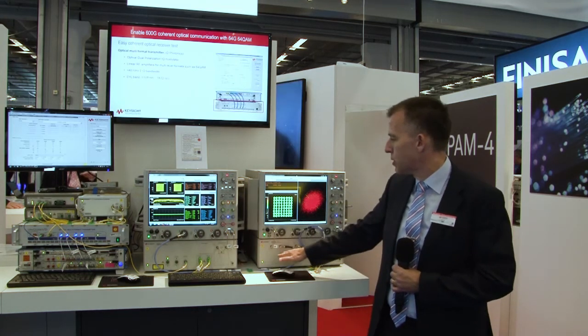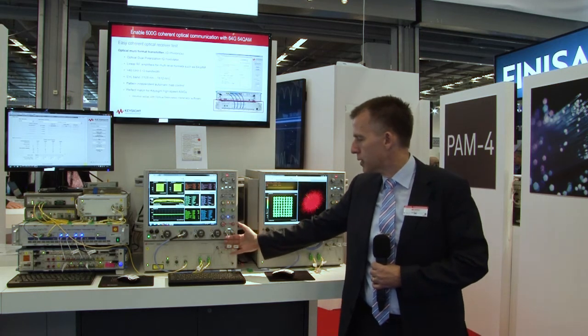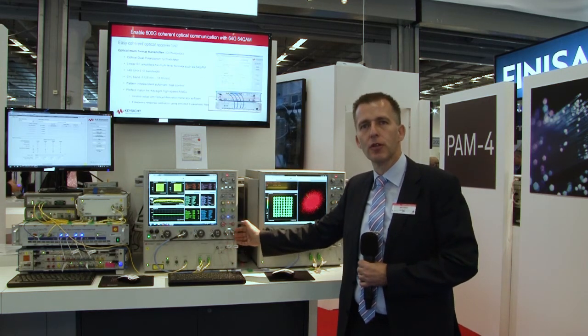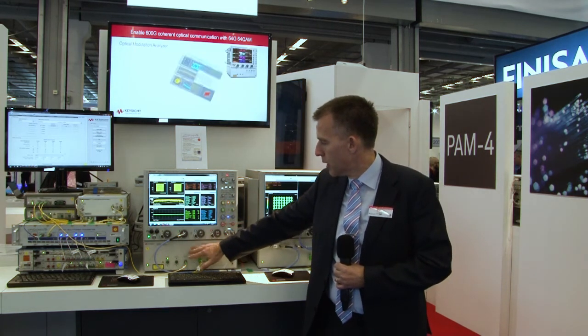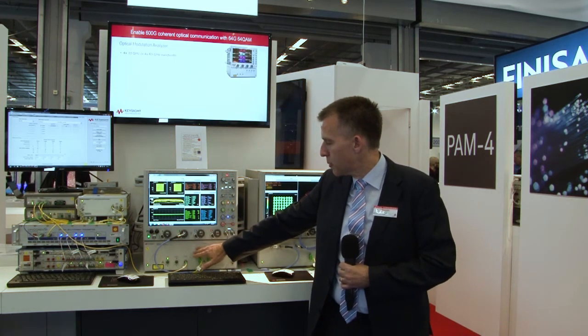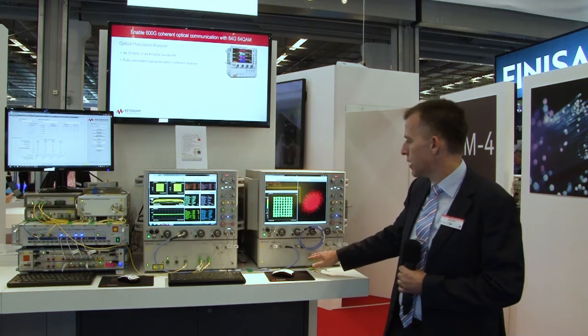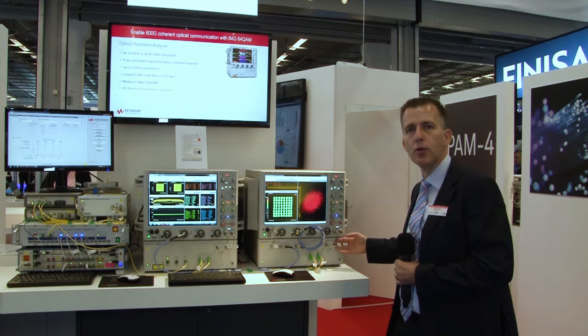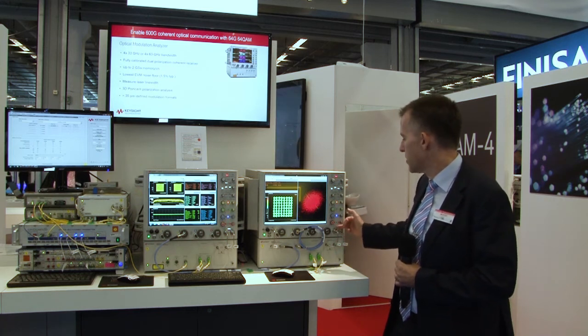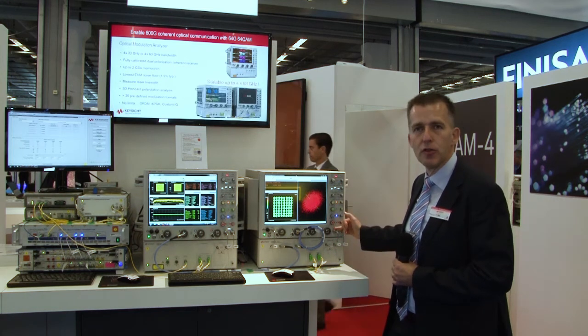The reason why we split it up into two pieces is to keep the electrical signals from the photo receivers to the oscilloscopes as short as possible. There's an optical distribution between the primary test set, as we call it, to the secondary test set where we have again another pair of photo receivers providing the O2E conversion to be analyzed by the oscilloscopes.